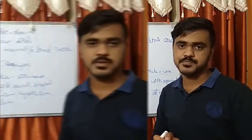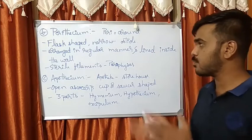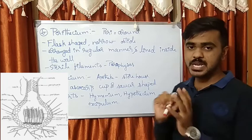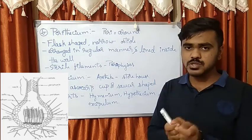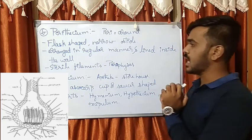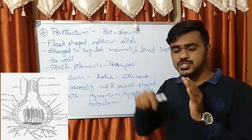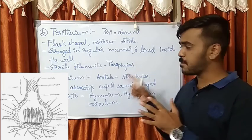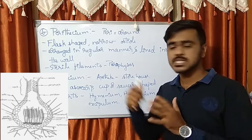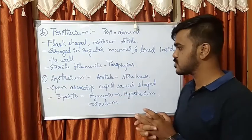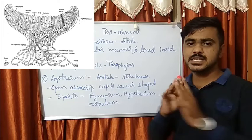The next ascocarp is the perithecium. The perithecium is also flask-shaped with a narrow ostiole. Inside the flask-shaped wall, the asci are arranged in a regular manner. In between the asci there are sterile filaments called paraphyses. That is about the perithecium.